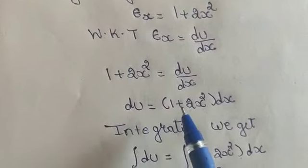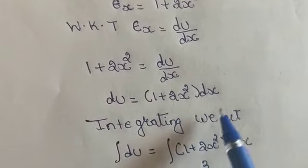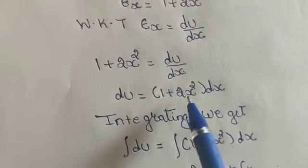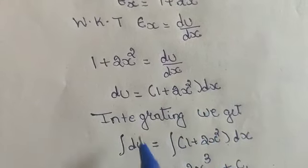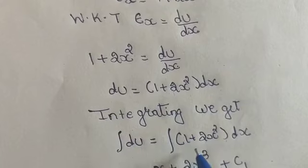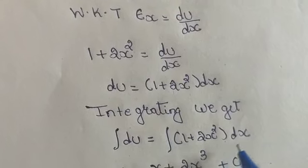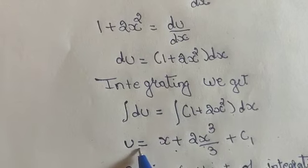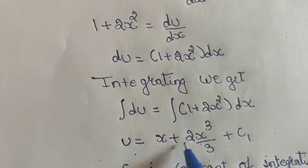Integrating the above equation, integration of du equals integration of 1 plus 2x squared into dx. After integrating, we will get u equals x plus 2x cubed by 3 plus C1.